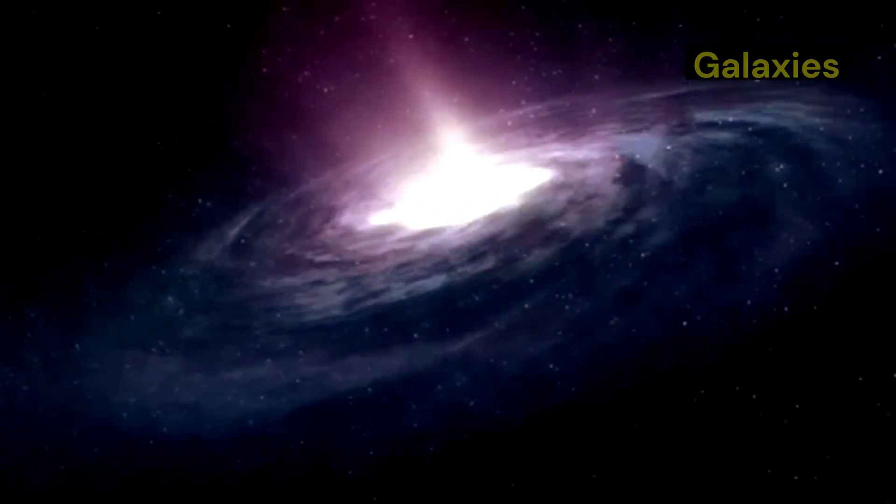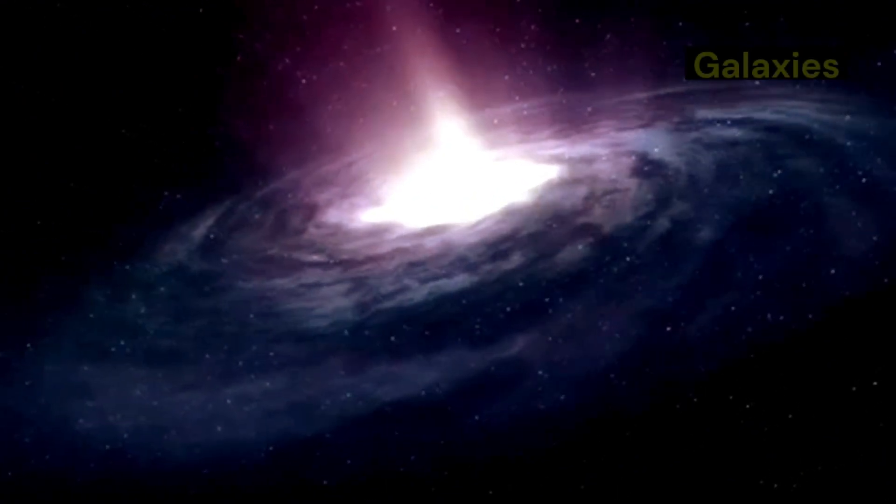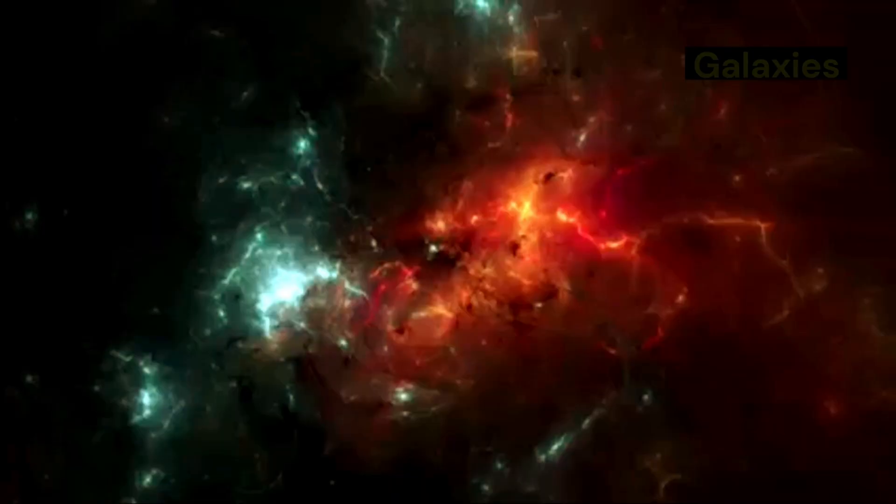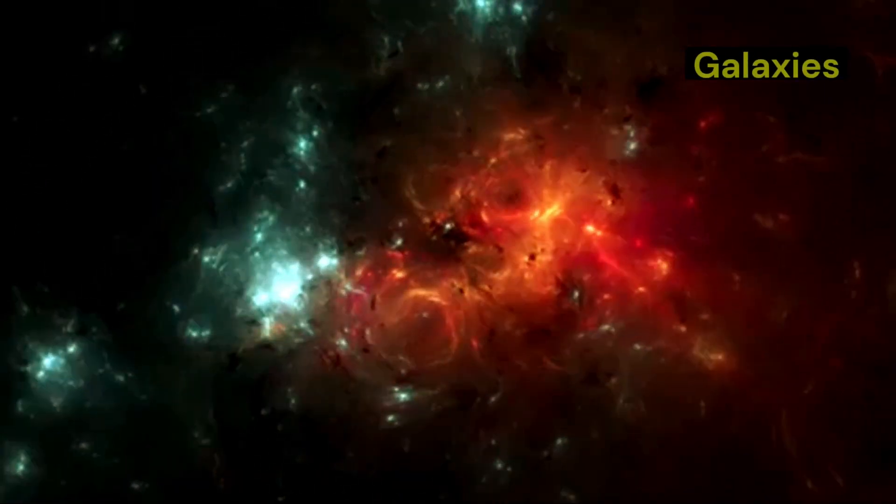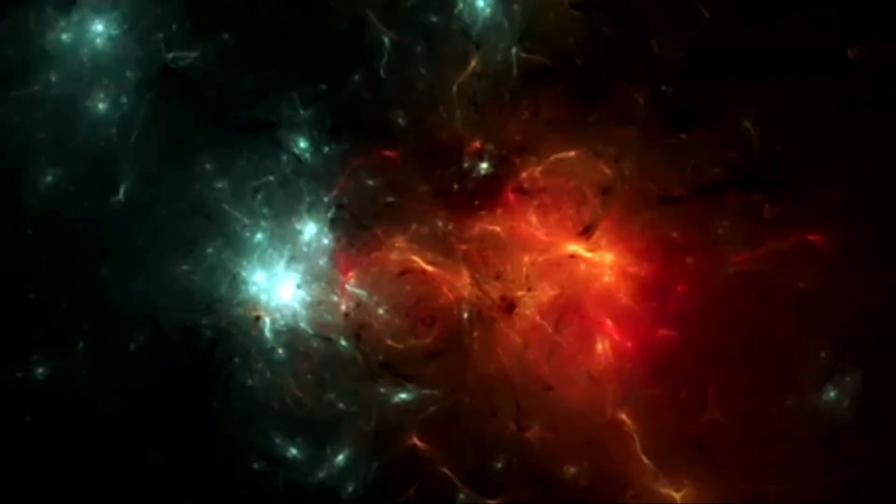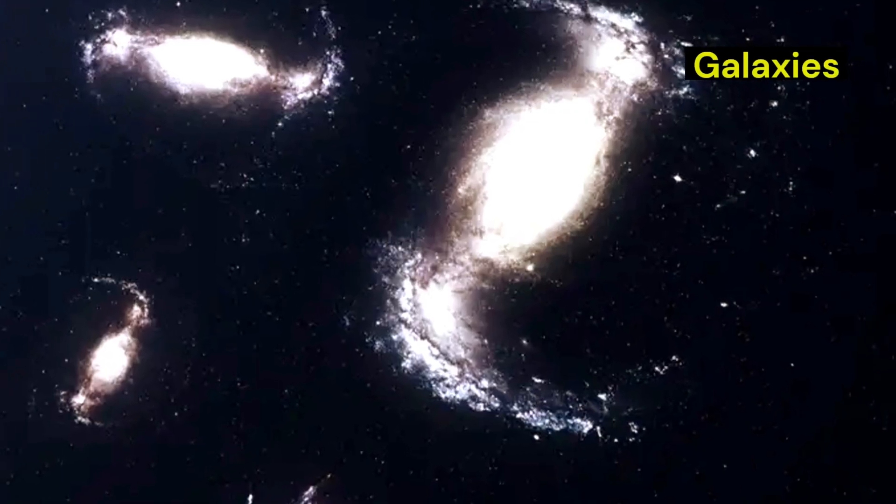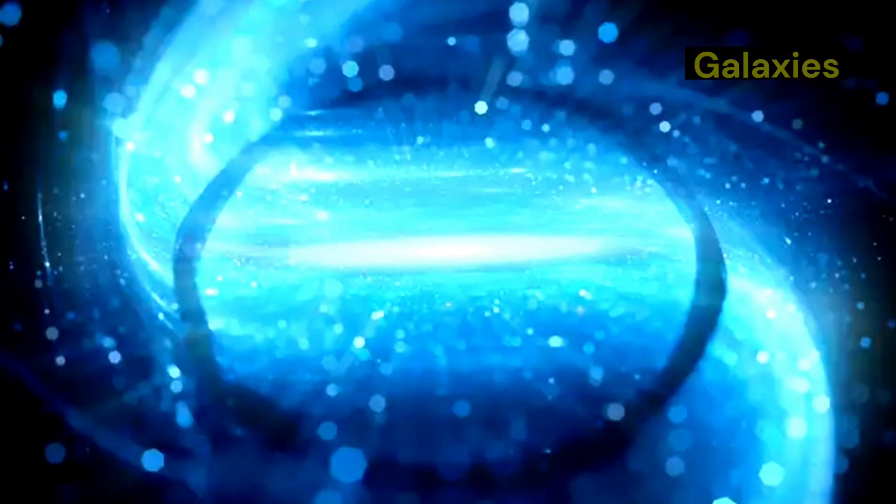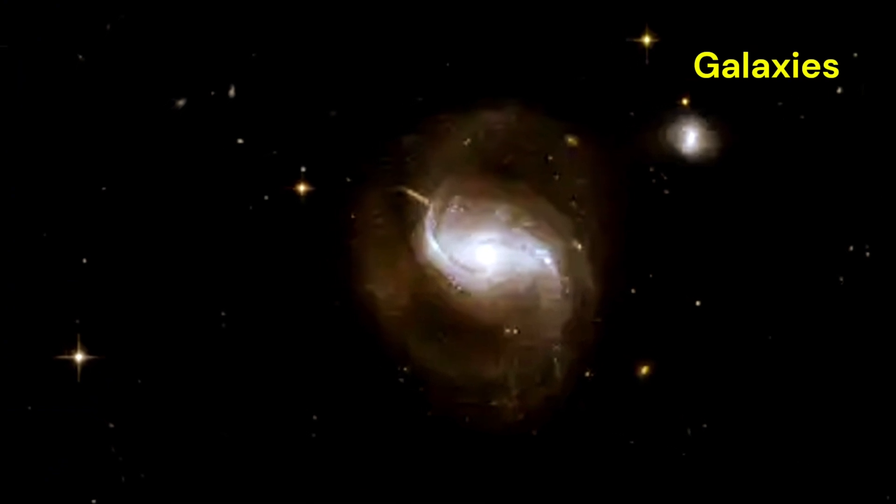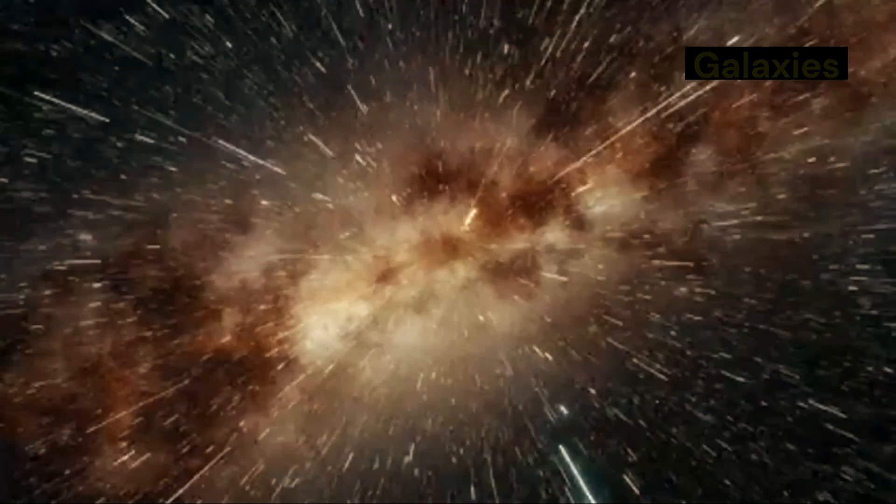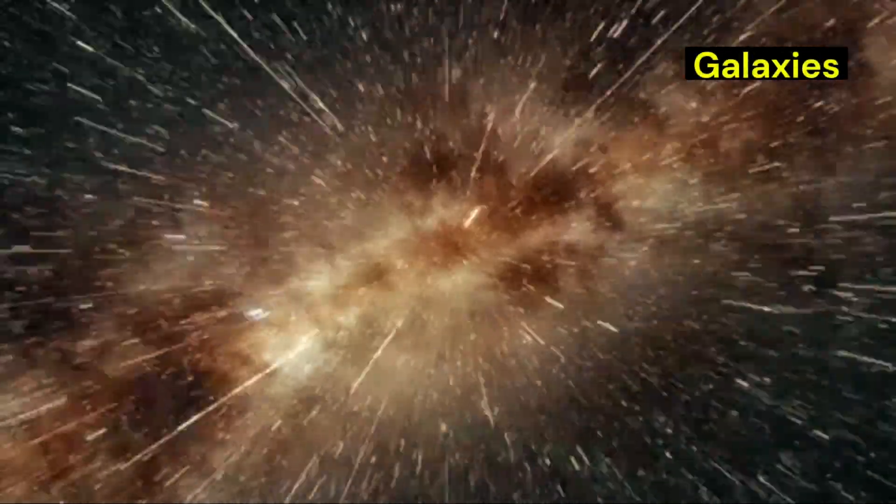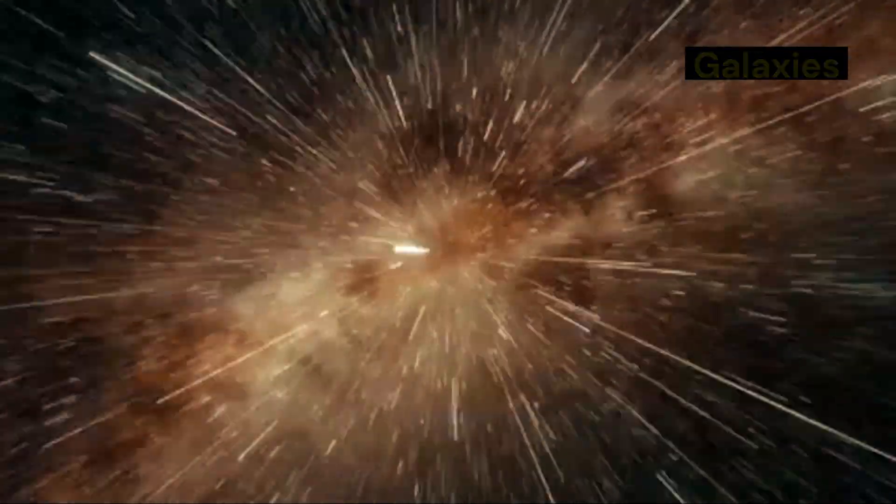Imagine a cosmic magnifying glass, bending and distorting light from distant objects. This phenomenon, known as gravitational lensing, occurs when the gravity of a massive object, such as a galaxy cluster, warps the fabric of space-time. This warping acts like a lens, magnifying and distorting the light from objects behind it. JWST has captured stunning images of gravitational lensing, revealing multiple images of the same distant galaxy, distorted and stretched by the immense gravity of intervening galaxy clusters. By studying these lensed images, astronomers can learn more about the distribution of mass in the universe and refine our understanding of the universe's expansion rate.